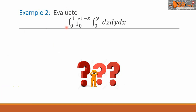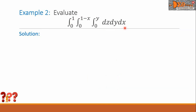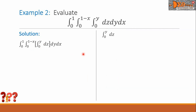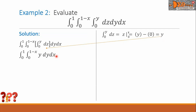Example 2. Evaluate this triple integral: the first integral from 0 to 1, the second integral from 0 up to 1 minus x, the third integral from 0 to y. This is dz, dy, dx. The first step is to integrate the innermost integral, which is the definite integral from 0 to y, dz. We can copy this on the side and evaluate. The integral of dz is simply z, evaluated from 0 to y. Substituting the values, we have y minus 0, simplified to y. We have now this new function to be substituted in here, and it will be like this.